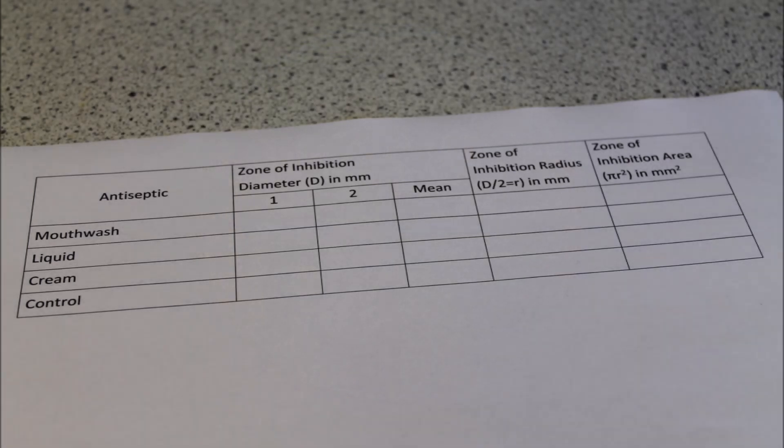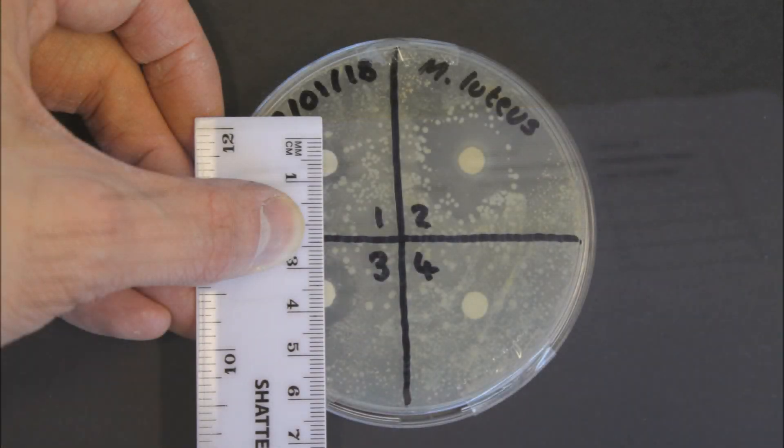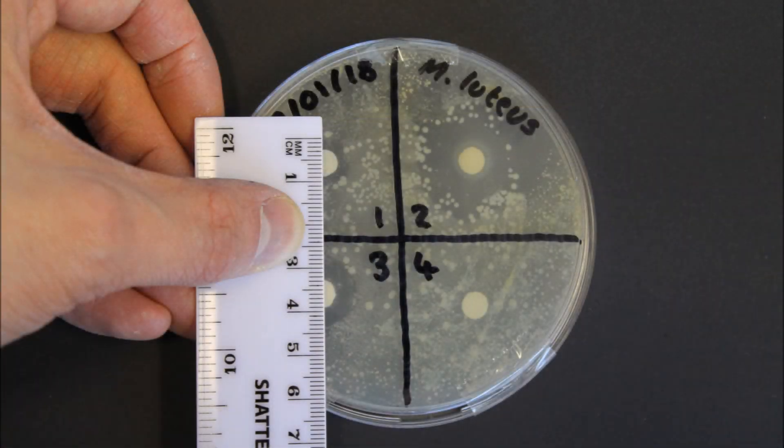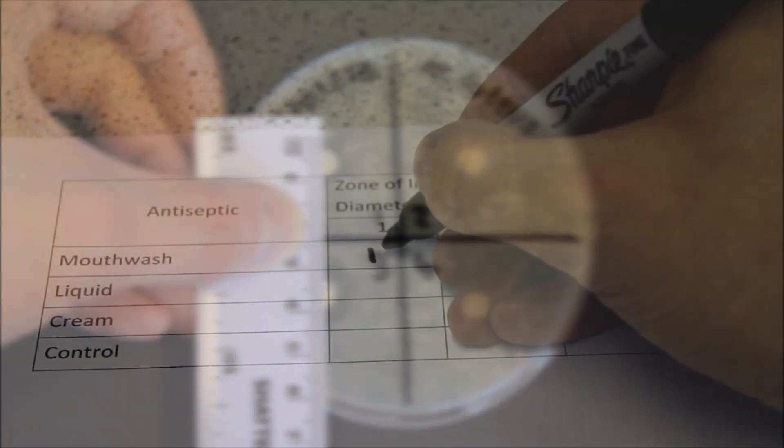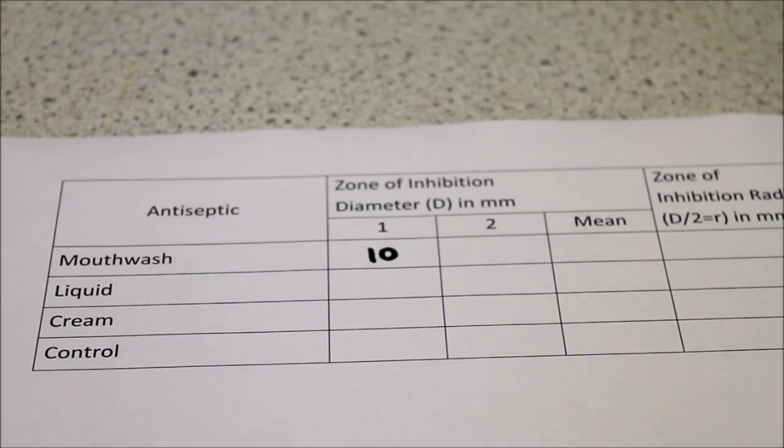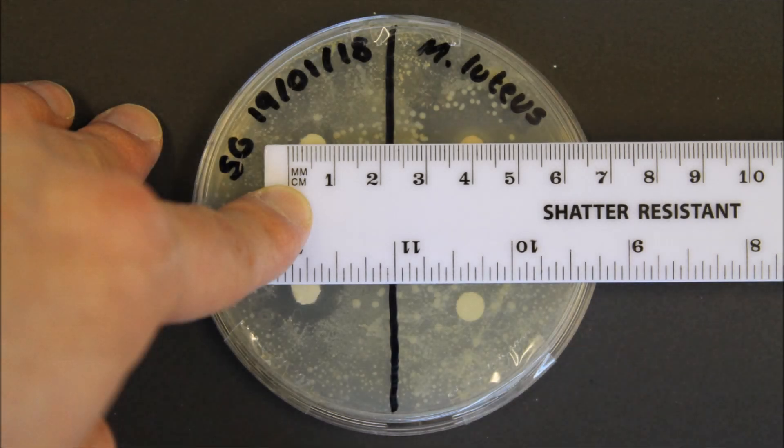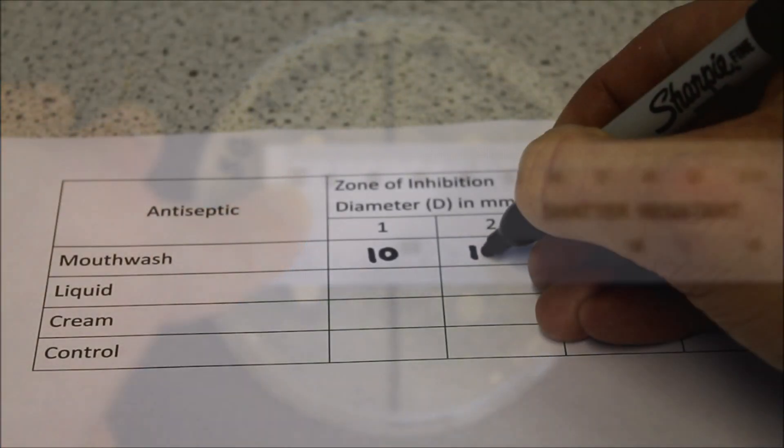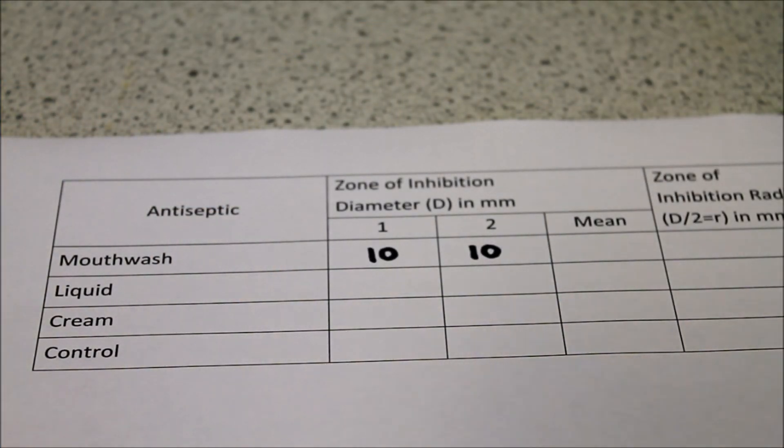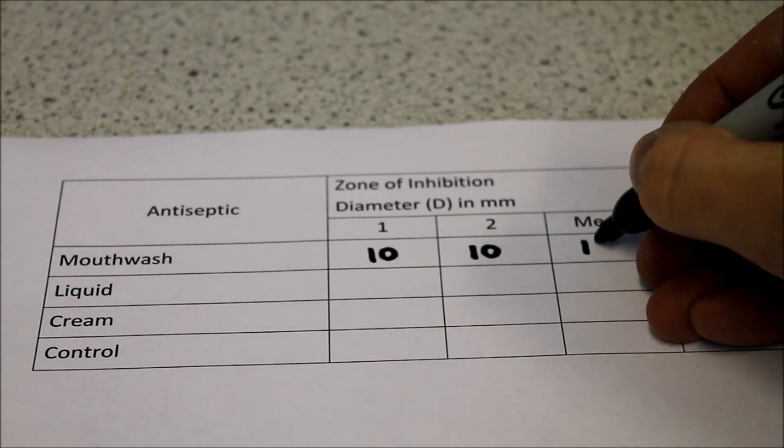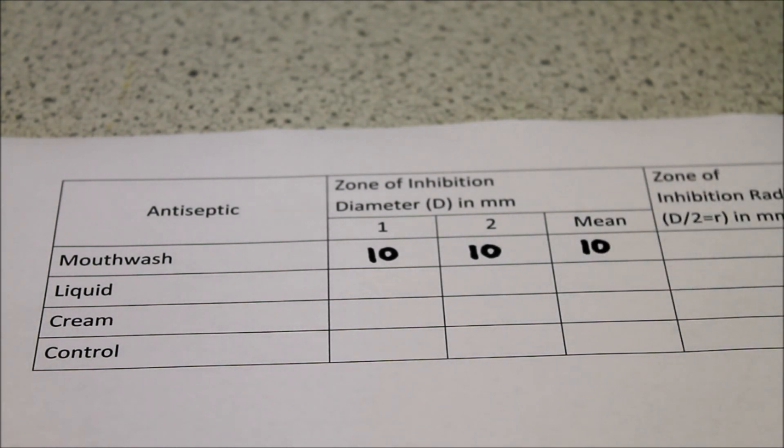You will now need to draw a results table similar to this. For each antiseptic disc use a ruler to measure the diameter of the zone of inhibition. Here it is 10 millimeters. The diameter will need to be measured a second time at 90 degrees to the first because zones of inhibition are not always circular. However here it is 10 millimeters again. The mean average diameter can now be calculated and in this case it's the same.